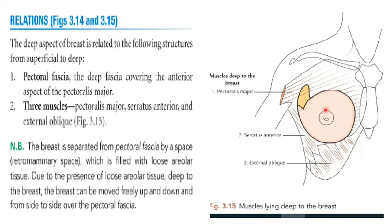The breast is present over deep muscles which are present behind it. You should know the names of these muscles. The pectoralis major has been shown previously in the cut section. The serratus anterior and external oblique muscle, which is a muscle of the abdomen, are also present. These three muscles are present behind the breast.